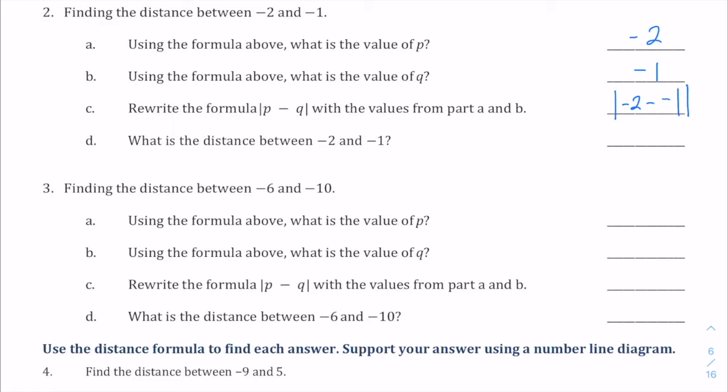And then close the absolute value bar. And then we can turn in our double negatives into a plus there, so negative two plus one would be the absolute value of negative one. And the absolute value of negative one is simply one. So that is the distance between negative two and negative one.